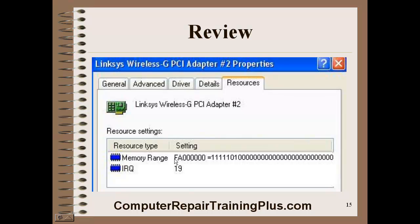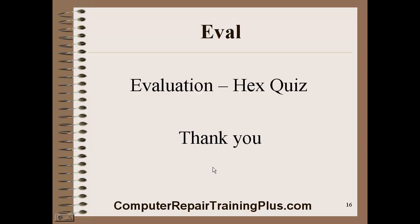Remember that the largest digit is an F. When taking a quiz for A+, they might throw something higher than an F, like G or H — but right away you know that's not a correct answer because hexadecimal digits only go from 0 to 9 and then A through F. Anything higher than F is not a valid hexadecimal digit. We have a hexadecimal quiz on the Computer Repair Training Plus website for you to take. Thank you very much for your time.